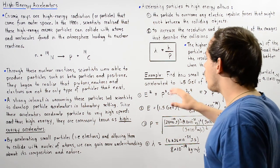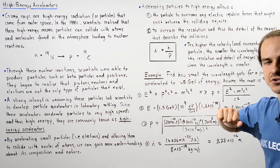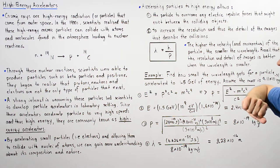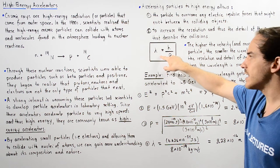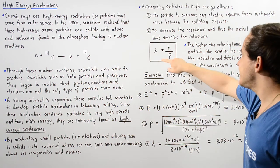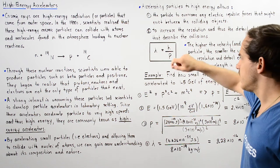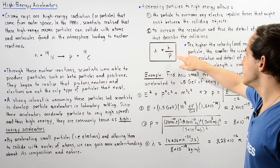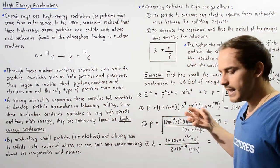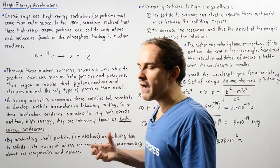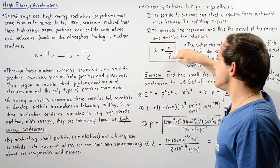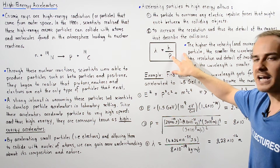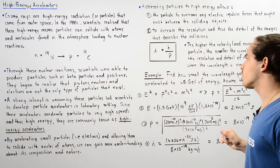Recall de Broglie's hypothesis. De Broglie hypothesized that the wavelength of any particle is equal to h, Planck's constant, divided by p, where p is the momentum of our particle. So p equals m multiplied by v, where v is our velocity.